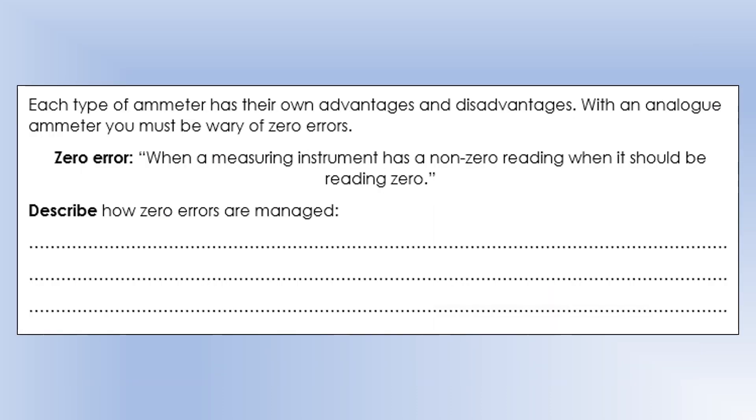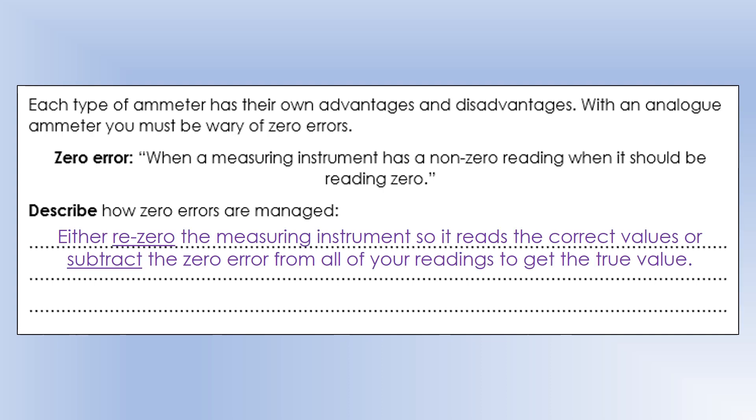So something you have to watch out for, something that crops up more often with analog type measuring instruments, but can occur with both, is something called a zero error. And that's when a measuring instrument has a non-zero reading when it should be reading zero. So you come up to the measuring device, it's not plugged into anything, but it's not reading zero. So there are kind of two ways of dealing with this, and I'll show you the different times we'd use both. So the first thing we could do is, if we can, we would re-zero it. So something like a mass balance, for instance, there's usually a button on it, which allows you to re-zero and set the current conditions to zero. So that's an option. Or if we can't do that, the other thing we can do is just subtract that value from all the readings, because that should be the same for all your readings. So if we subtract it, that should give us what the true measurement is.